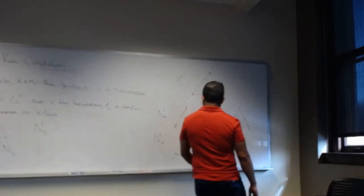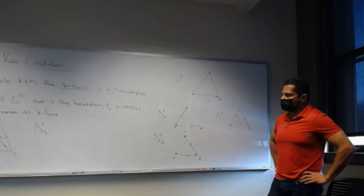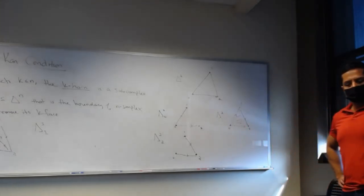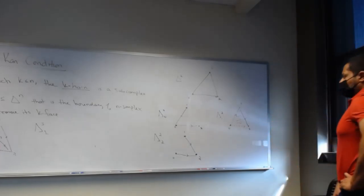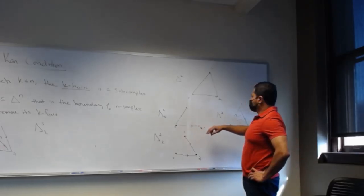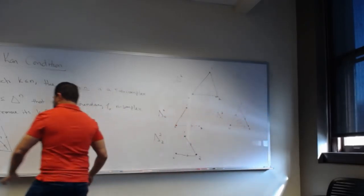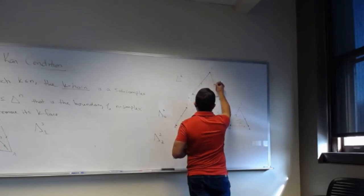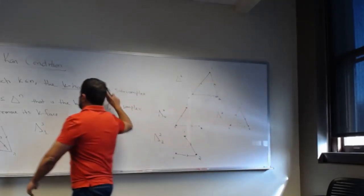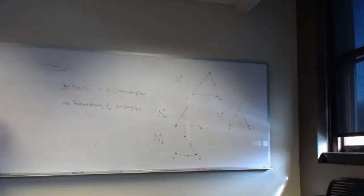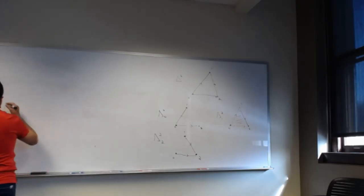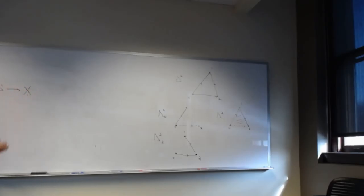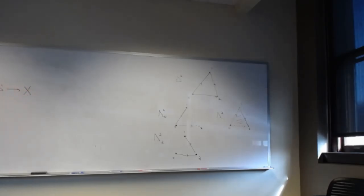So if the strong Kan condition is satisfied, we could argue by induction on n: take the top edge from 0 to n, and we want to show it's invertible. There's another simplex from 0 to n-1, which is some lower simplex, and we assume all of those are already invertible by induction. So we only need to fill in this one last triangle — that's the picture we need to focus on. Suppose I have an edge in the simplicial set.